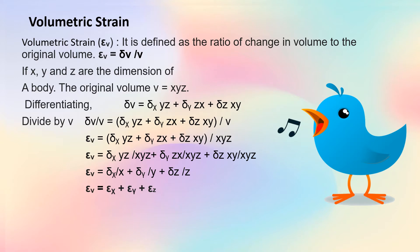Volumetric strain epsilon V is defined as the ratio of change in volume to original volume. So epsilon V is equal to delta V divided by V. If X, Y, and Z are the dimensions of a body, then the original volume V is equal to X into Y into Z. Differentiating this equation, we get delta V equal to delta X·YZ plus delta Y·ZX plus delta Z·XY.